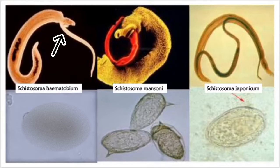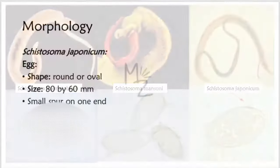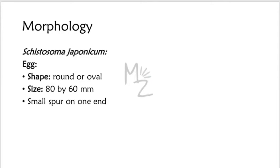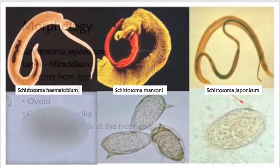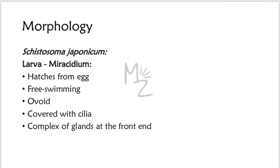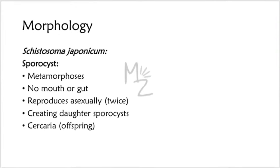For S. japonicum, the eggs are round or oval, 80 micrometers long by 60 micrometers wide, and have a small spur on one side. The larva miracidium hatches from the egg; it is free-swimming, ovoid, covered with cilia, and has a complex of glands at the front. The next form is the sporocyst — no mouth or gut is present. It reproduces asexually twice: the first time it creates daughter sporocysts, and the second time it gives rise to cercariae.